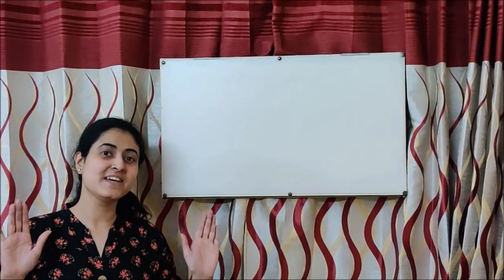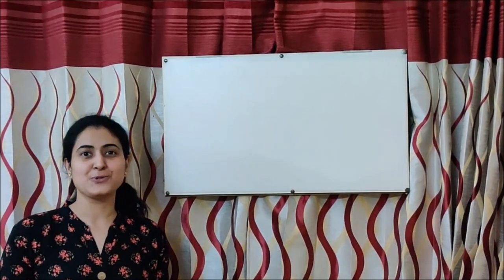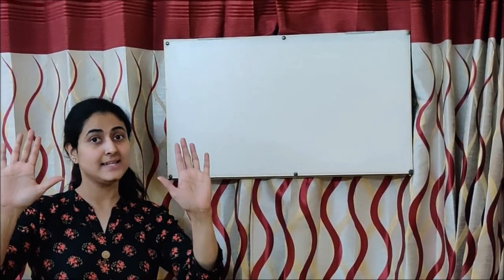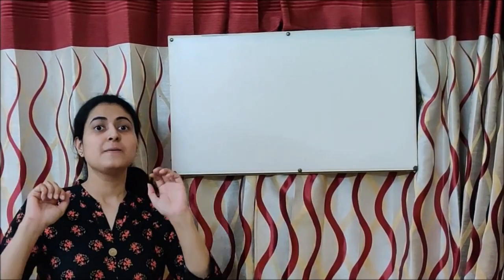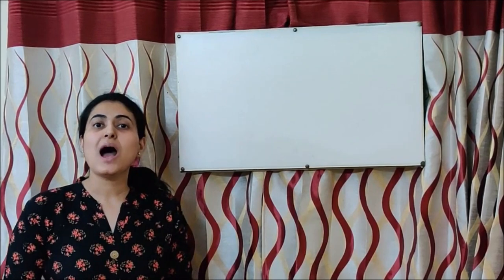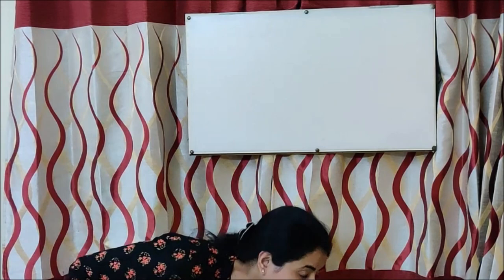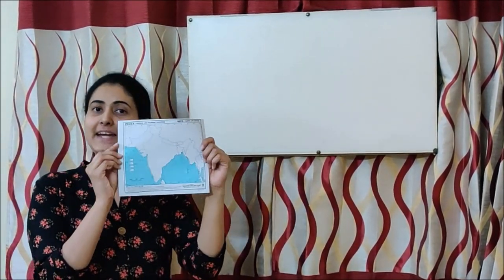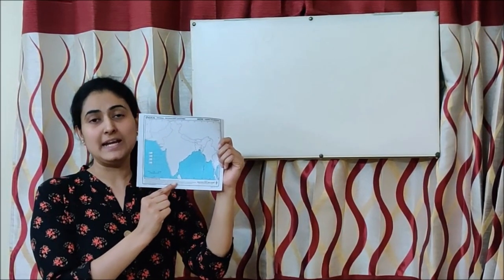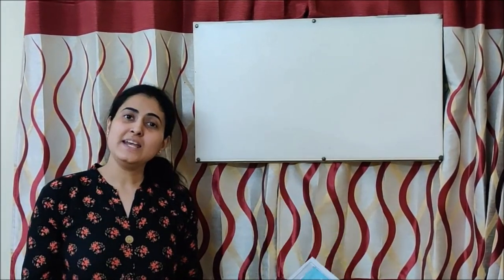Hello children! Today, we are going to do a poem. The name of this poem is Ten Little Indians. This poem is about ten boys and girls who are Indians, just like me and you. This is our India, and those who live in India are called Indians. So we all are Indians. Now, let us start this poem.